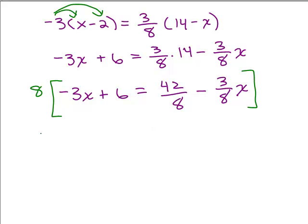So I'm going to multiply 8 times each term. 8 times the negative 3x plus 8 times 6 equals 8 times the 42/8. And this is what I was talking about. If you just leave it, that's going to be easy to cancel out the 8ths. And 8 times the 3/8 x.